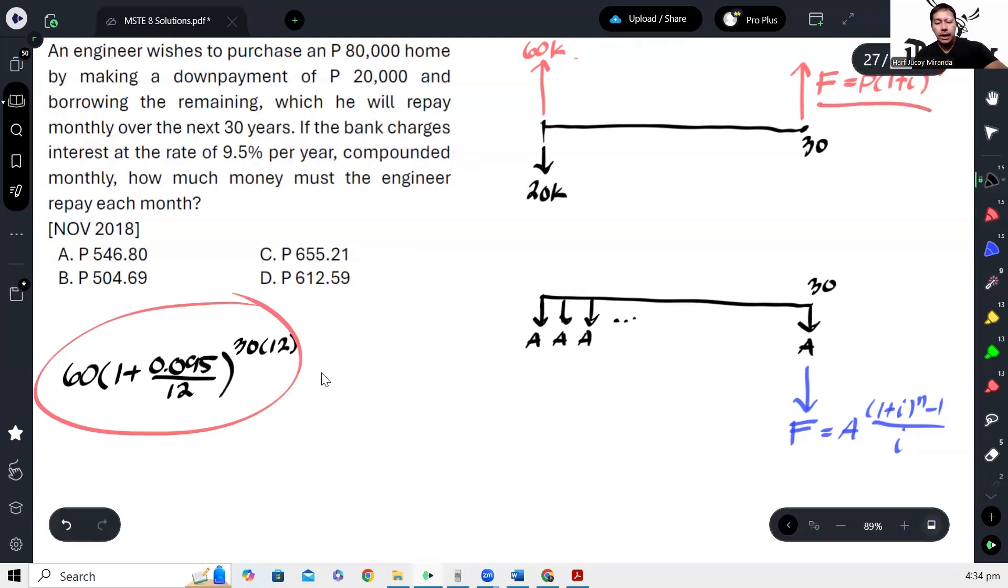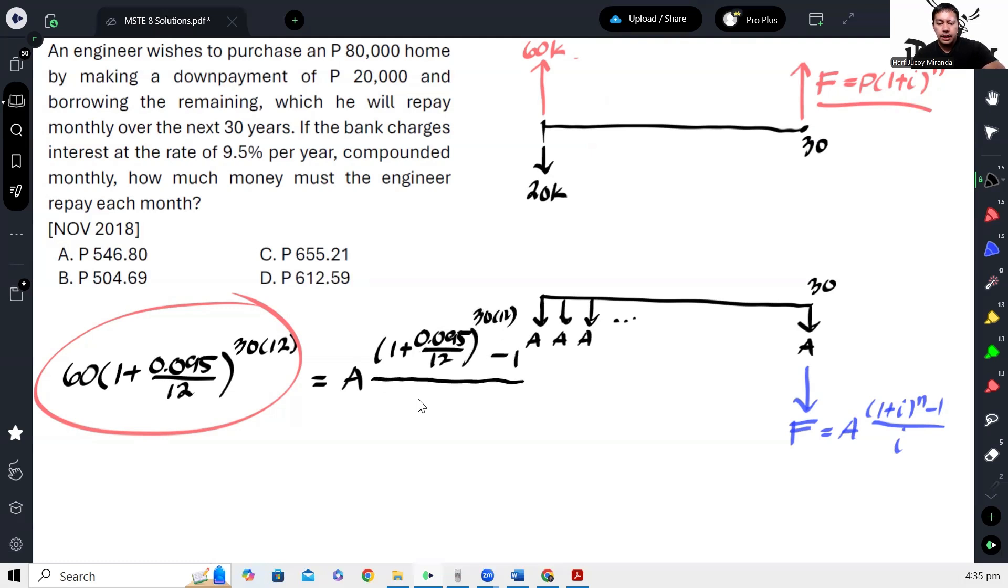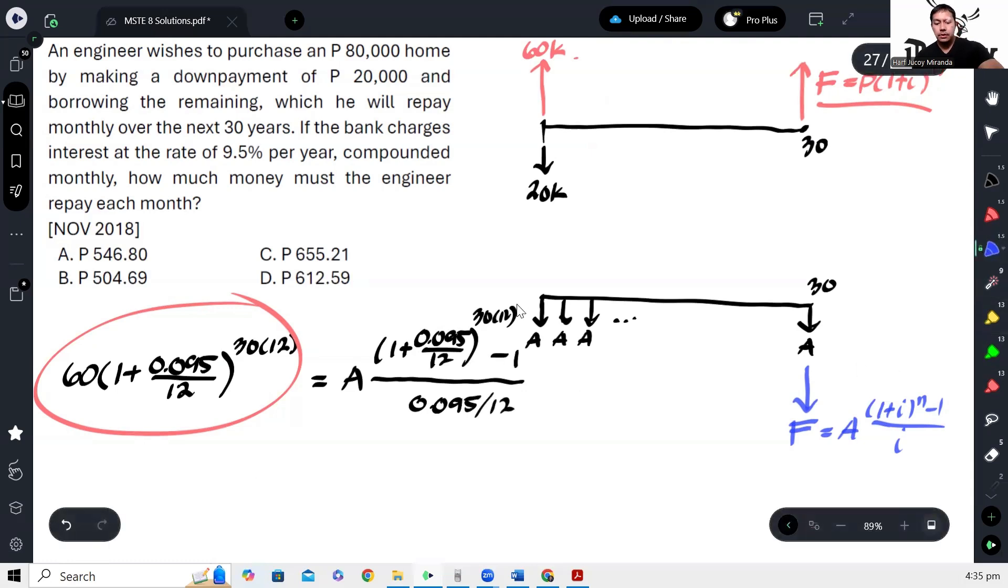Equals, eto naman, yung A times 1 plus, ganun ulit, 0.095 over 12 raised to 30 years times 12 minus 1 over 0.095 over 12. And from here, so again, eto naman yun. Eto, eto naman yun.